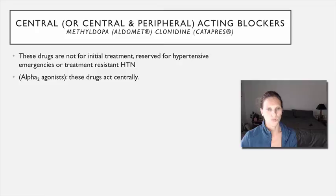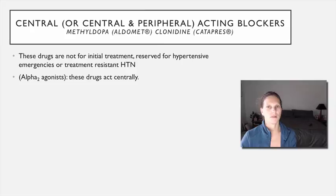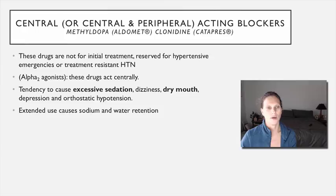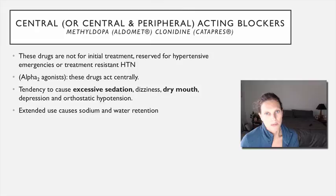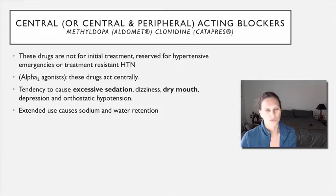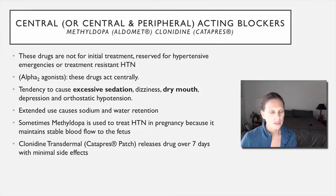Central acting drugs are not used very frequently and are definitely not first-line therapy, but they work by modifying the autonomic nervous system from the central nervous system downward. They're reserved for emergency situations or really drug-resistant hypertension. The alpha-2 agonists plug into this category — by hitting alpha-2 receptors in the brain, they decrease sympathetic outflow peripherally. However, these are central nervous system depressants, causing significant sedation, dizziness, dry mouth, depression, and orthostatic hypotension. Long-term use can also cause sodium and water retention.